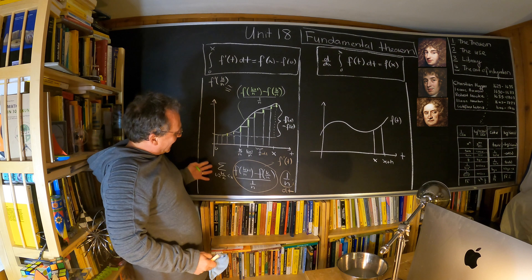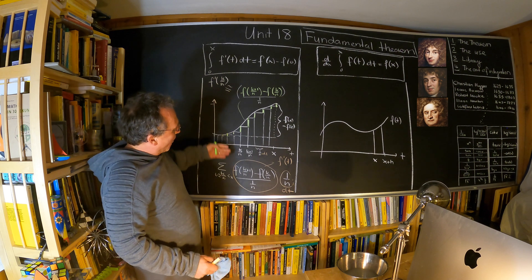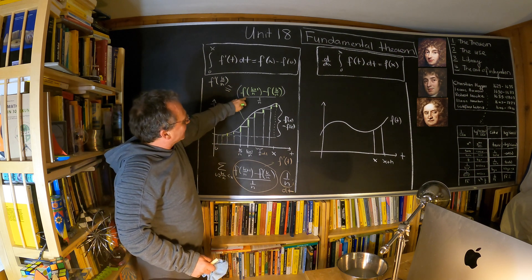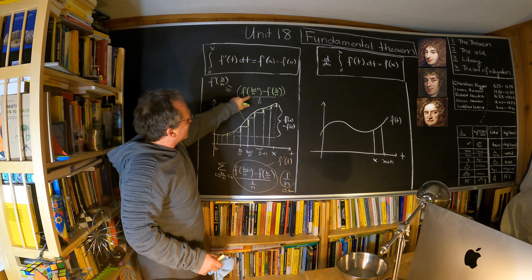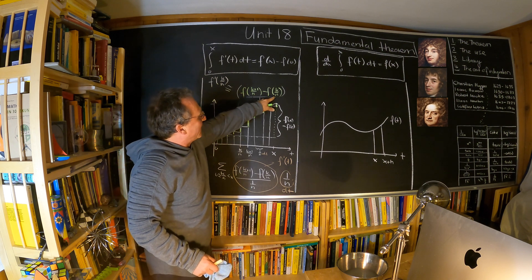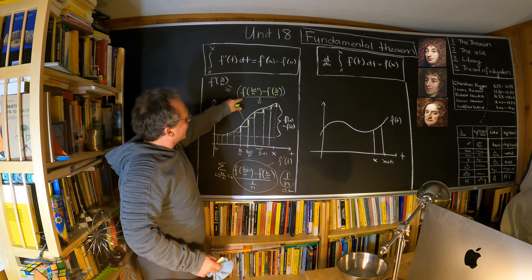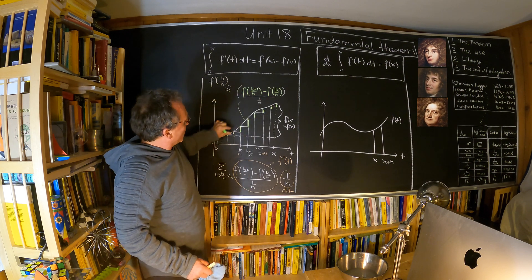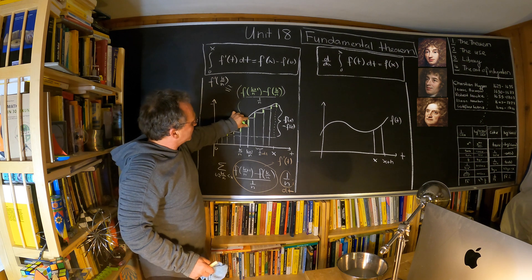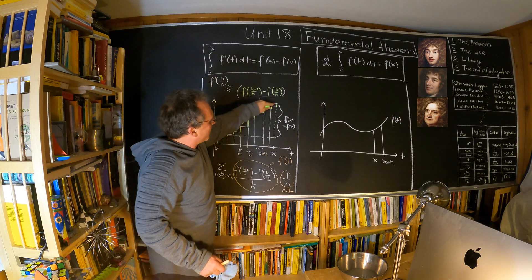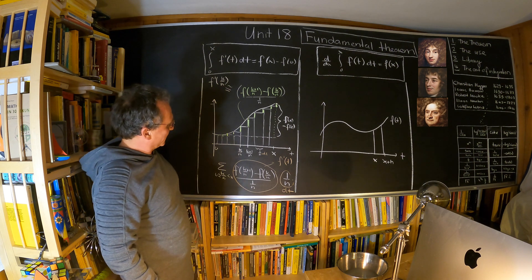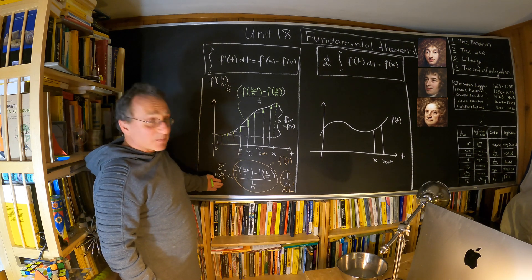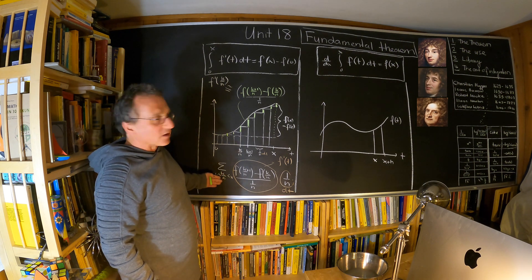When we integrate up all these changes — summing f((k+1)/n) minus f(k/n) — this is a telescoping sum. All these changes add up and the only thing that survives is f(x) minus f(0). That's the proof of the first part of the fundamental theorem.